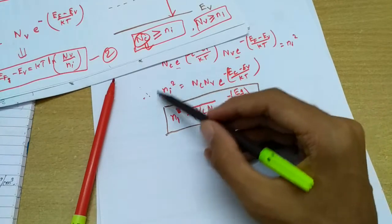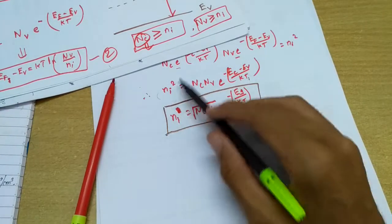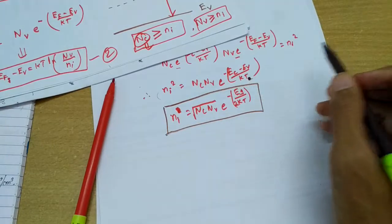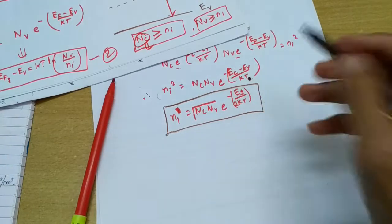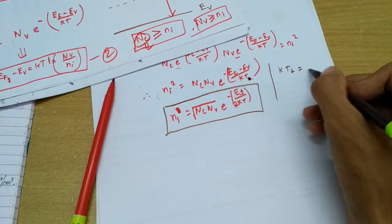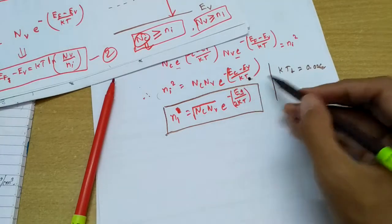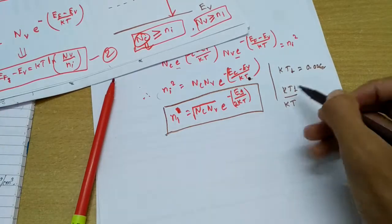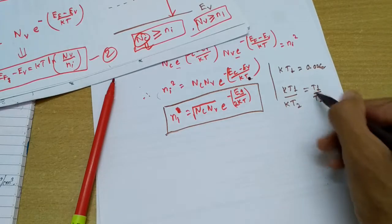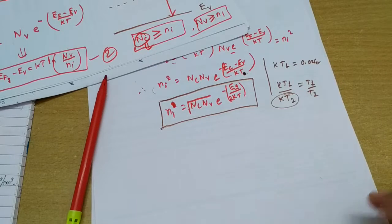A common exam question gives ni at temperature T1 and asks for ni at temperature T2. You simply take the ratio ni1/ni2. One trick used is providing kT1 directly (e.g., 0.026 eV). To find kT2, note that kT1/kT2 = T1/T2, and since T1 and T2 are individually given, you can calculate kT2 and substitute. This is the only trick being used.